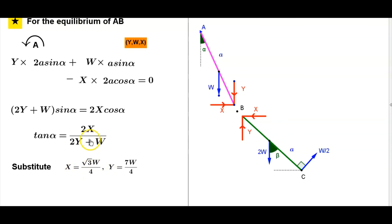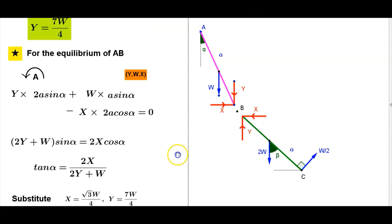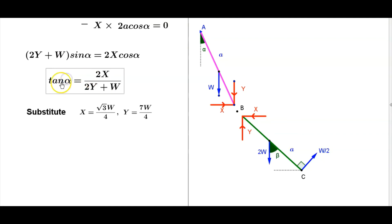Substitute X equals root 3W by 4, Y equals 7W by 4. You already calculated. Therefore here tan alpha equals 2X, root 3W by 4.